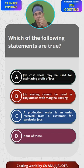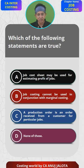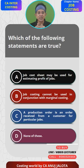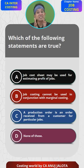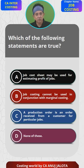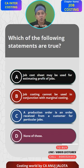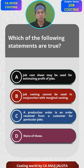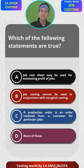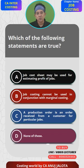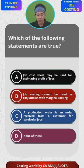Option C states that a production order is an order received from a customer for a particular job. In reality, the customer gives the order to the sales team, and once the sales team knows what the customer wants, they give the order to the production department — that is called a production order. So a production order is received from the sales team, not directly from the customer. Therefore C is also wrong.